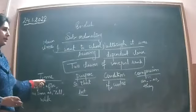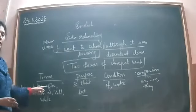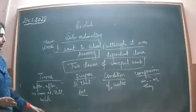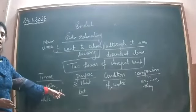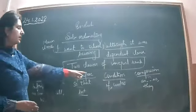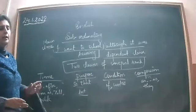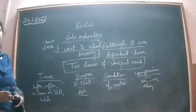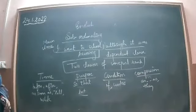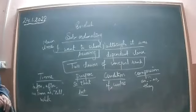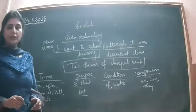To summarize: subordinating conjunctions of time include before, after, as soon as, till, and while. Those of purpose include 'so that' and 'lest.' Those of condition include 'if' and 'unless.' And those of comparison include 'as...as' and 'than.' With this we have finished the explanation of the topic of conjunctions.